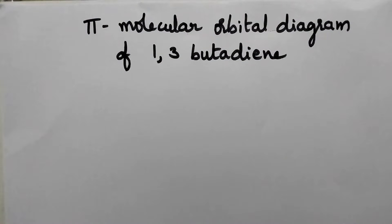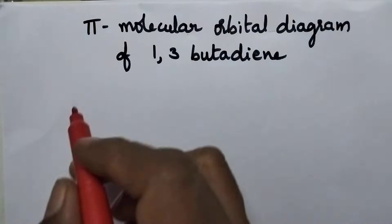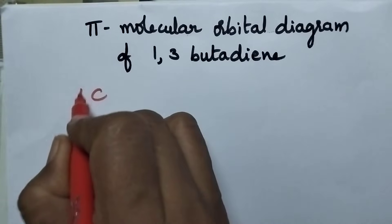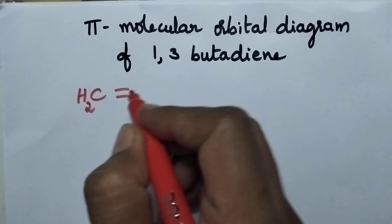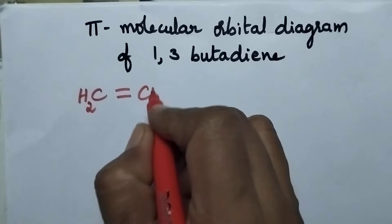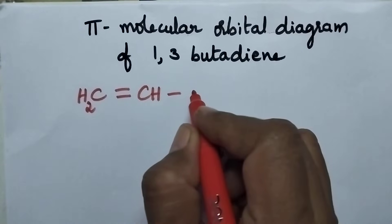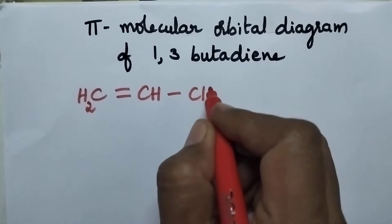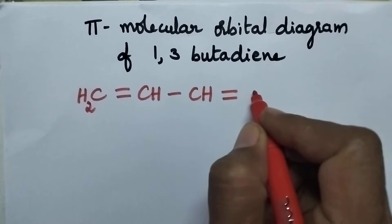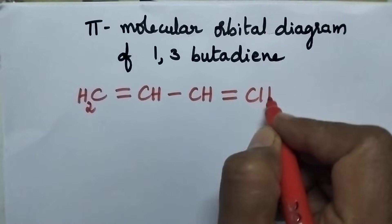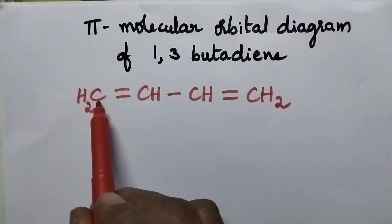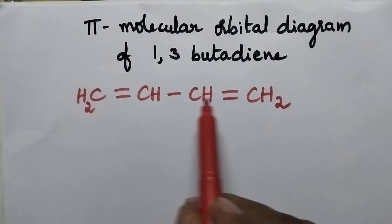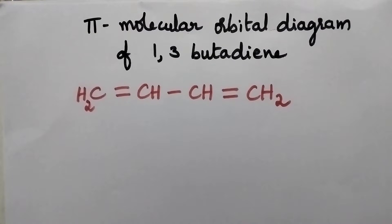Coming to the structure of 1,3-butadiene, it is CH2 double bond, CH single bond, CH double bond, CH2. So especially here, 4 carbon atoms are present.